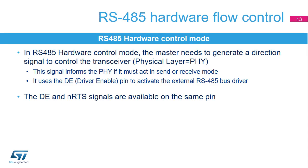For serial half-duplex communication protocols like RS-485, the master needs to generate a direction signal to control the transceiver. This signal informs the physical layer if it must act in send or receive mode. In RS-485 mode, a control line is used. The Driver Enable pin (DE) is used to activate the external transceiver control. DE shares the pin with NRTS.